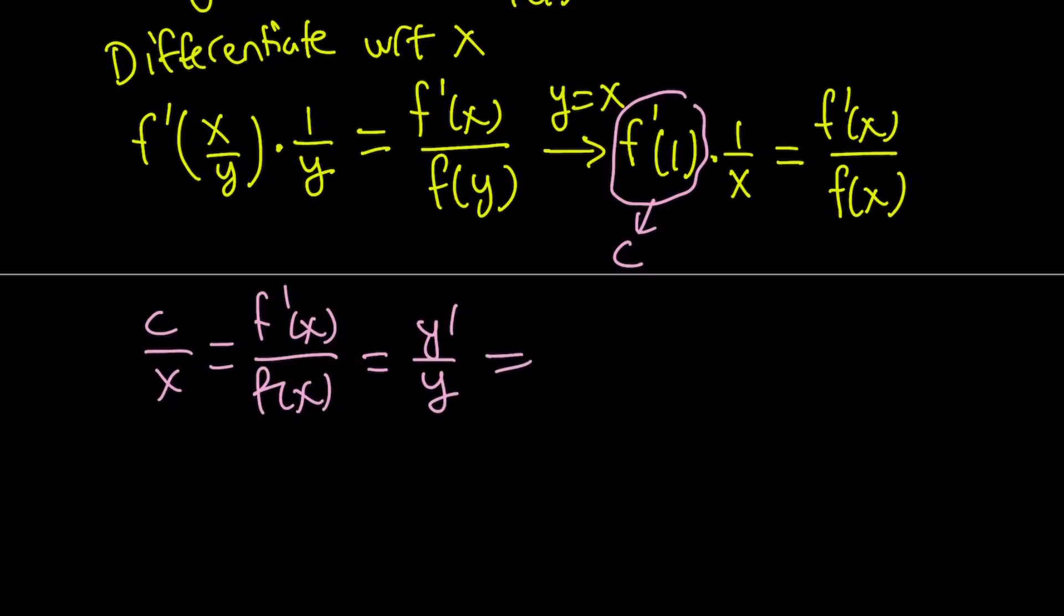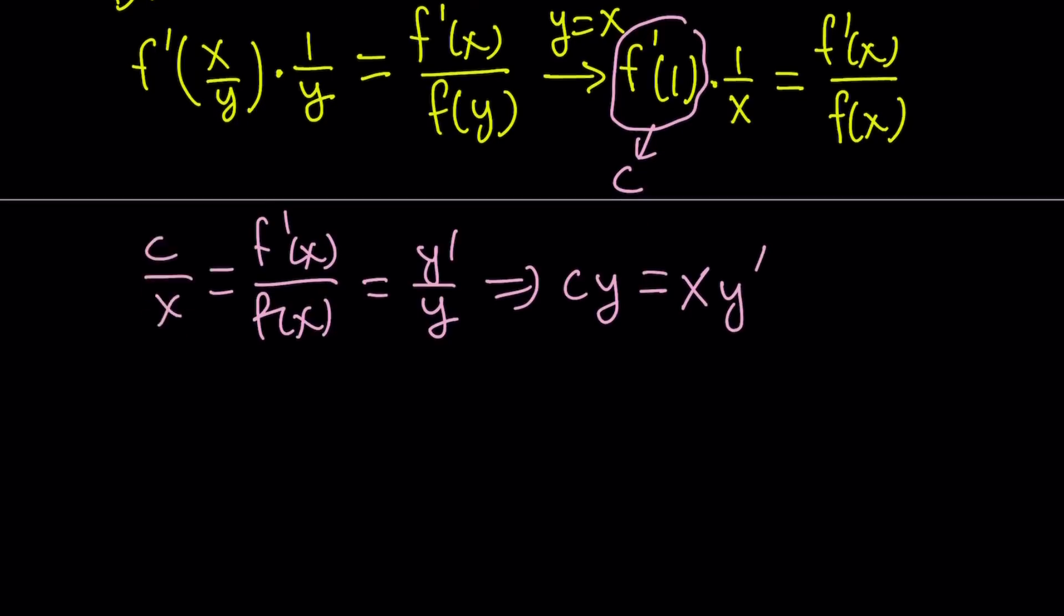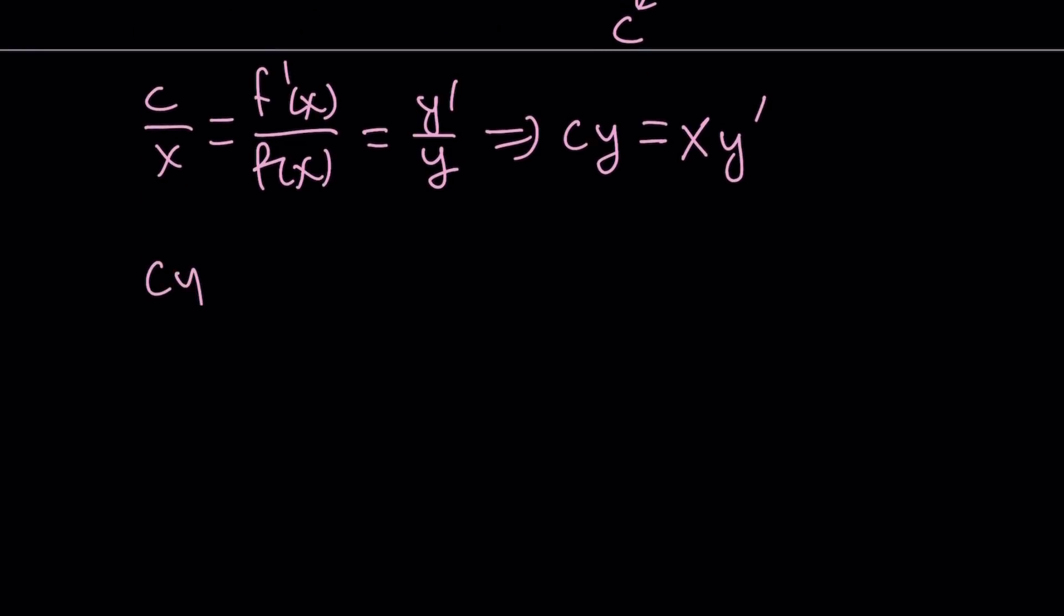From here, if you cross-multiply, I'm going to turn it into a differential equation. c y equals x times y prime, and then y prime can be replaced with dy over dx.